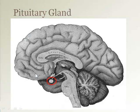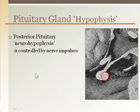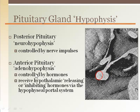The pituitary gland is located inferior to the hypothalamus and is connected to it by a stalk called the infundibulum. The pituitary gland is also called the hypophysis, which means to grow beneath. The pituitary gland is encased by the sella turcica of the sphenoid bone. The posterior pituitary gland, or neurohypophysis, is controlled by nerve impulses from the hypothalamus. The anterior pituitary gland, or adenohypophysis, is controlled by hormones traveling from the hypothalamus through the hypophysial portal system.